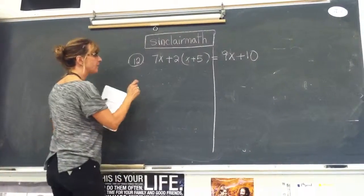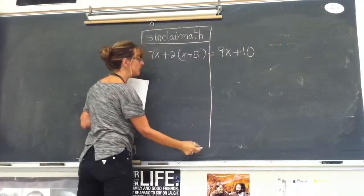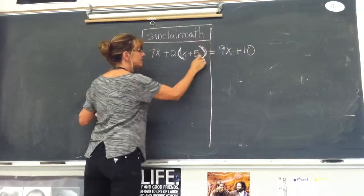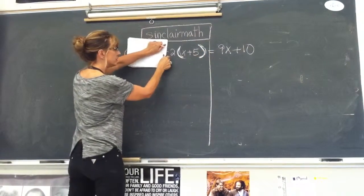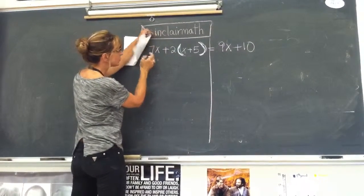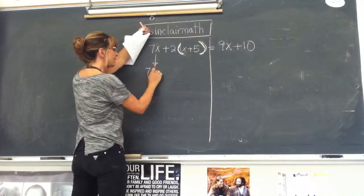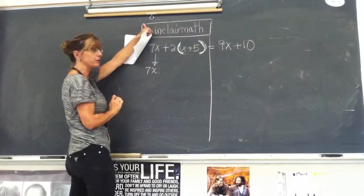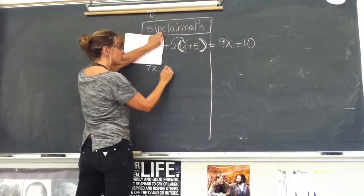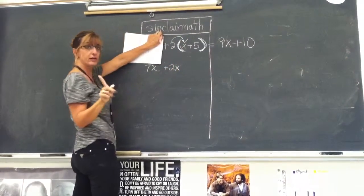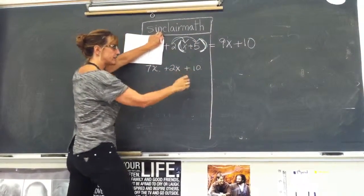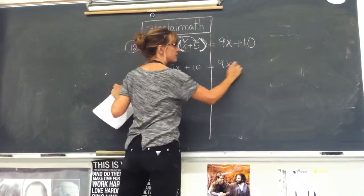Number 12 on the review packet. You're going to draw a line down your equal sign. As soon as you see a parenthesis, you know that there's a distributing. You look in front of the parenthesis and you see a positive 2. I'm just going to drop the 7x down for a minute while I distribute. You're always going to distribute first. Positive 2 times x is 2x. Notice no more parenthesis. 2 times 5 is 10. No more parenthesis. And on the other side, you have 9x + 10.